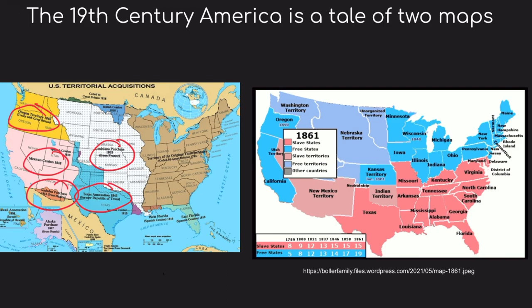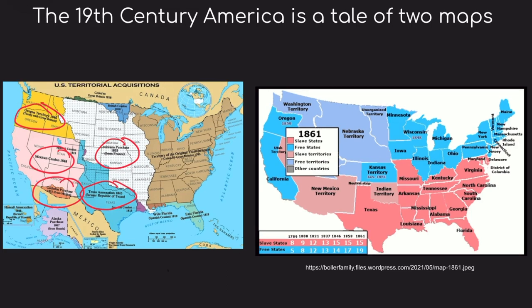In addition to westward expansion, the United States was also grappling with the growing disagreement between northern and southern states over slavery, as shown in the map on the right. Many southern farmers had grown largely dependent on the institution of slavery, as had northern manufacturing — which is often what trips many history students up.